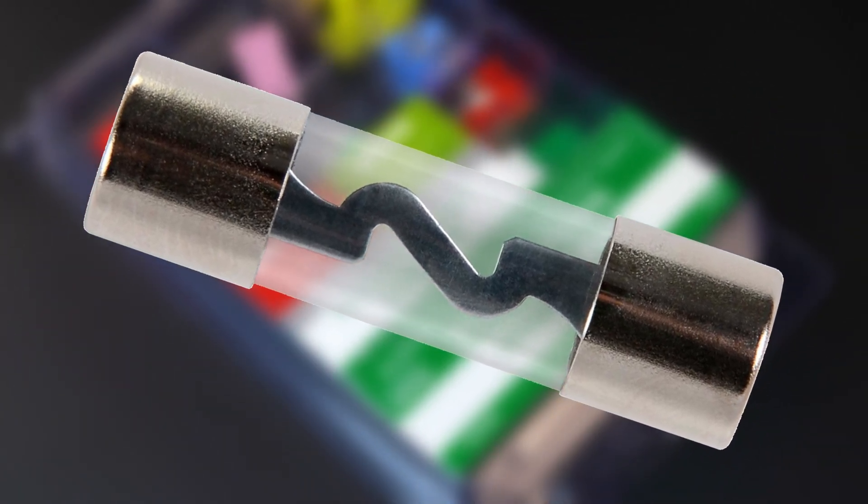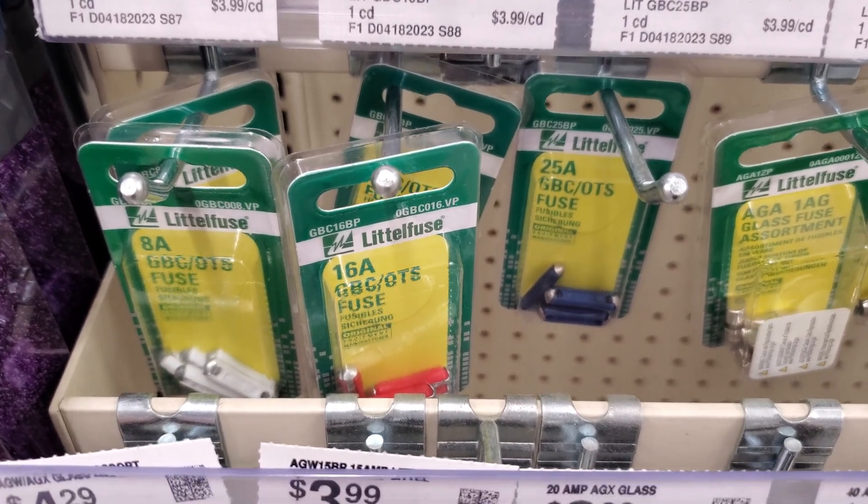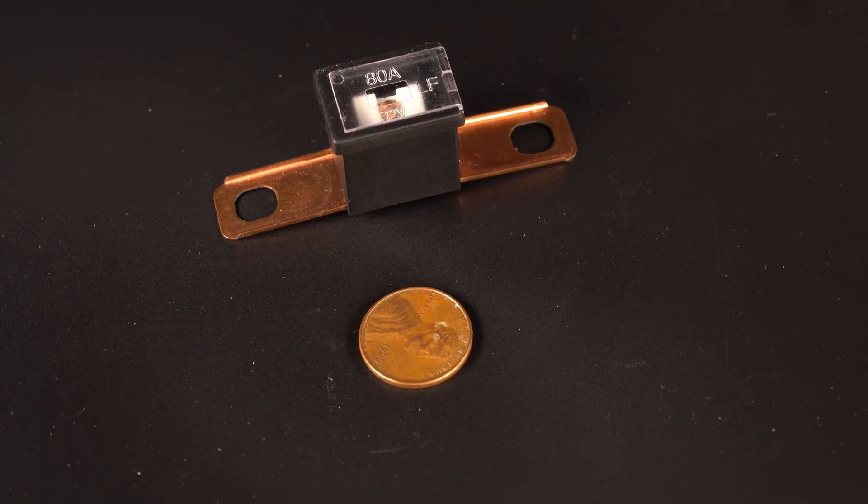While glass tube fuses are a readily available example of the type of fuse from the era, Bosch-type and Lucas-type fuses were also found on older vehicles for a while. For high amperage circuits, bolt-down fuses were used.